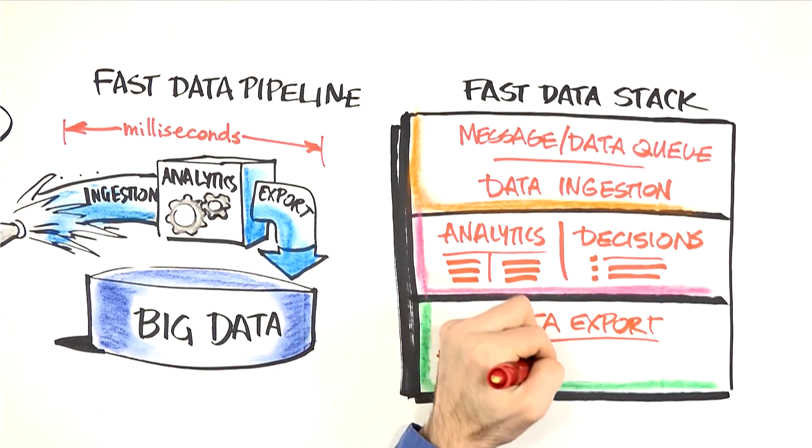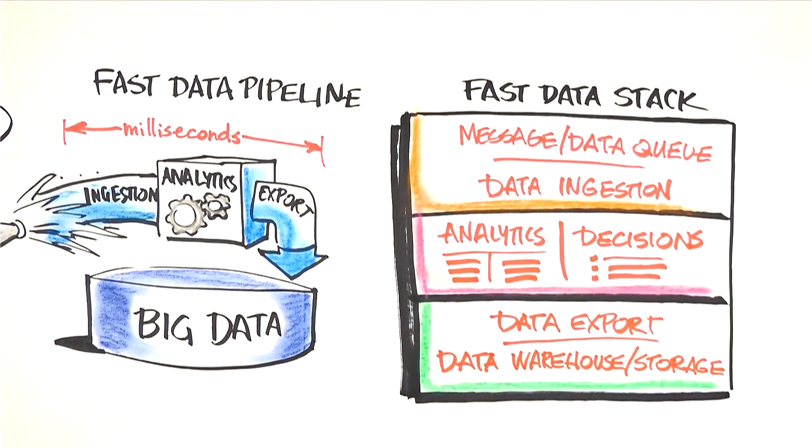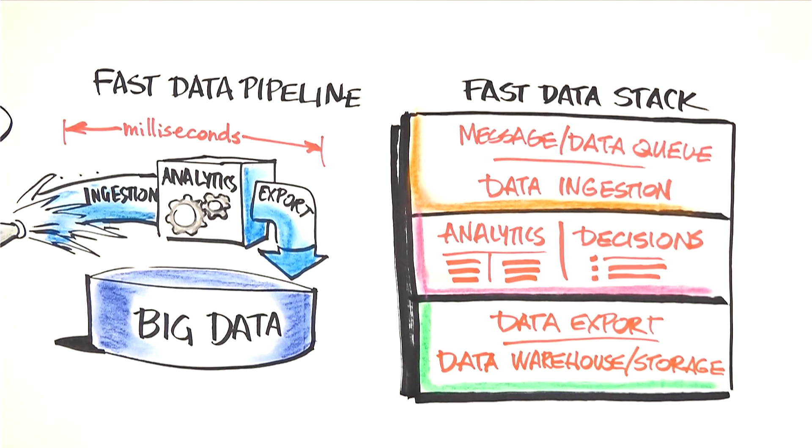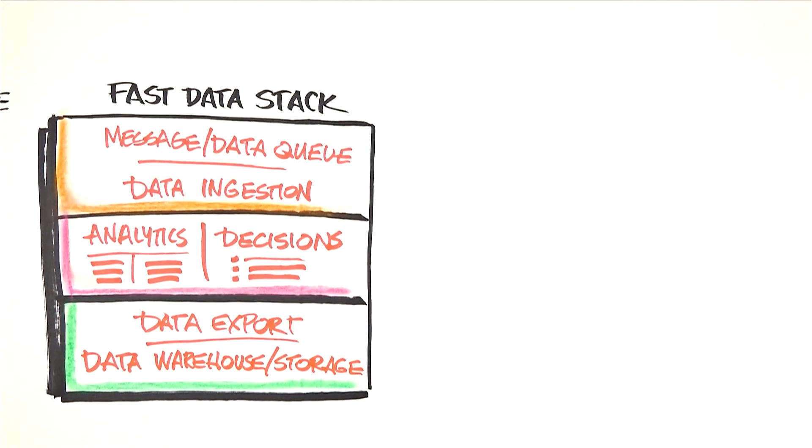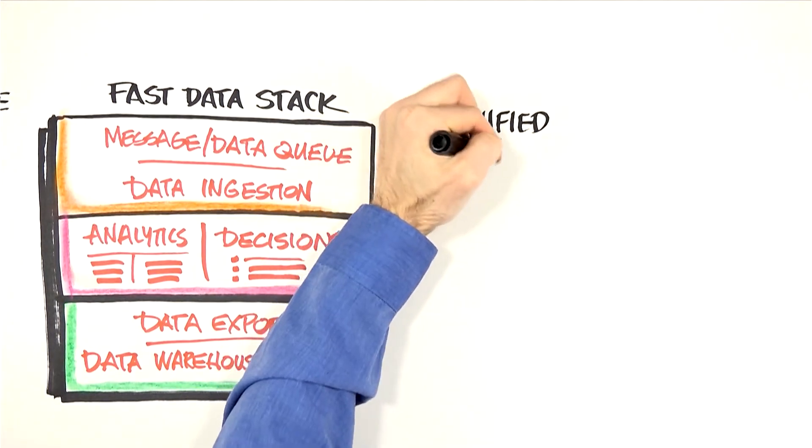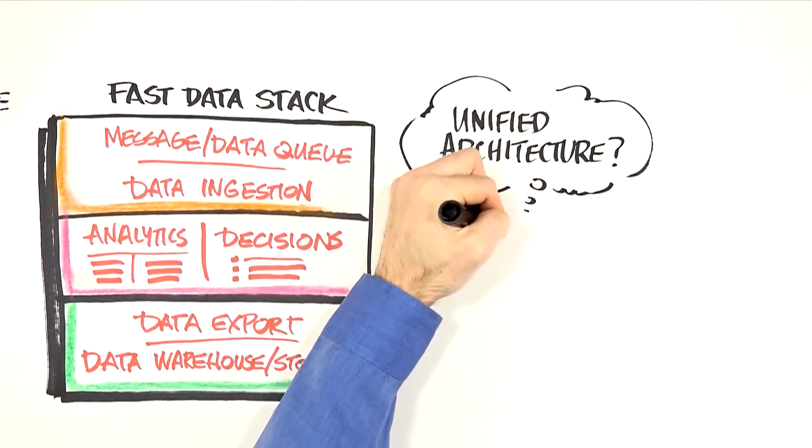Data is exported for long-term storage and analytics to Hadoop and other long-term data stores. Until now, the missing link between fast data and big data has been a unified enterprise data architecture.